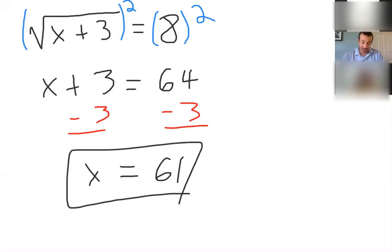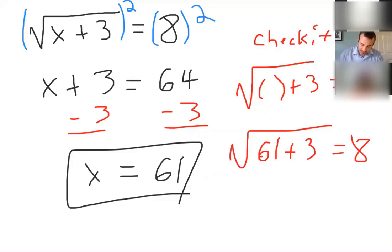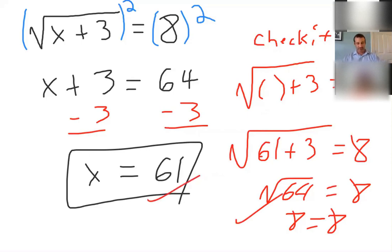Okay? Check it. So we have to check it. Uh-oh. iPad is low on batteries. Where did you go? Check it. So here's how we check it. The square root of x plus 3 equals 8. 61 goes right there. So the square root of 61 plus 3 equals 8. Square root of 64 equals 8. Works. Thanks, boys.